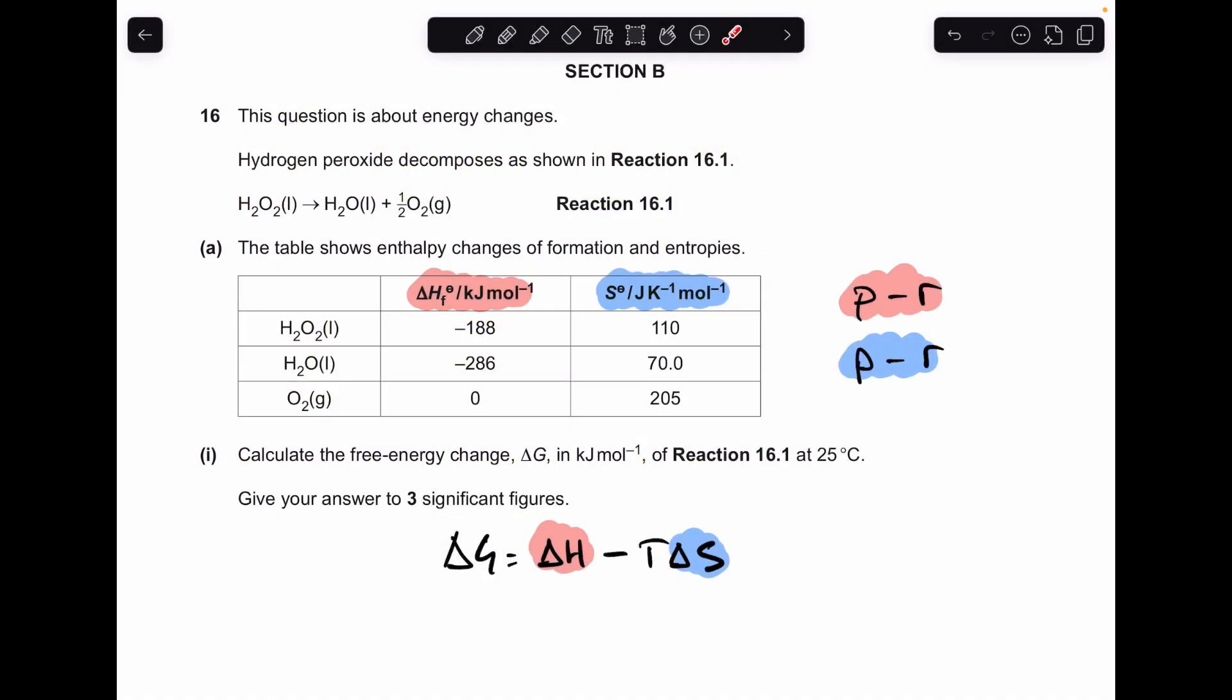So part A, we've got to calculate the free energy change in kJ per mole for this reaction. So I've written up there the ΔG = ΔH - TΔS.